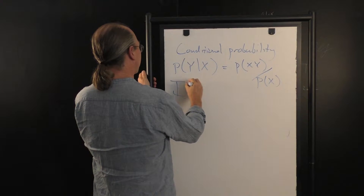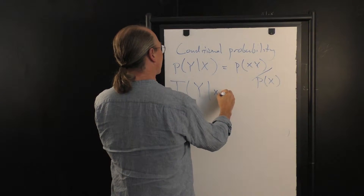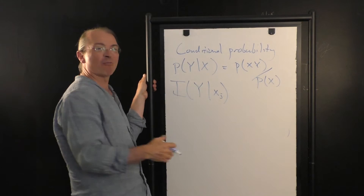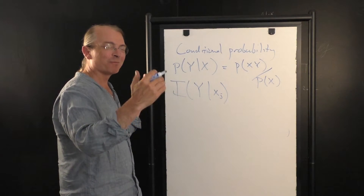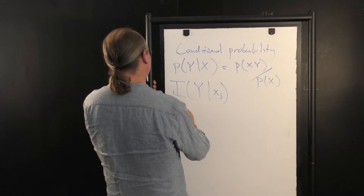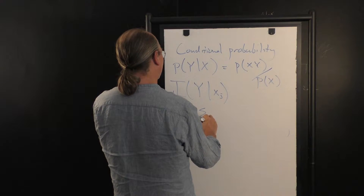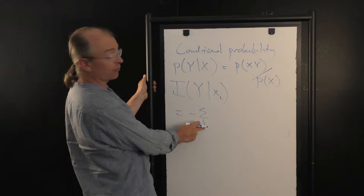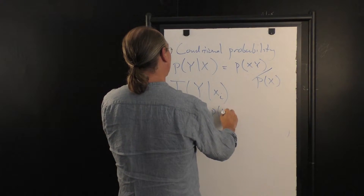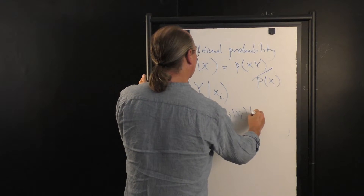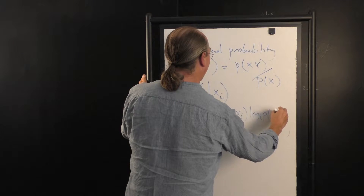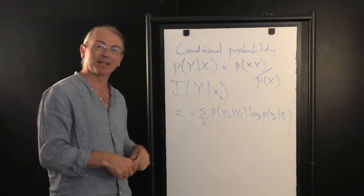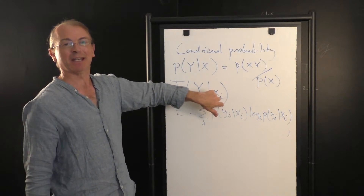We can also define a conditional information — the information in Y given that we know the value of X is X_i. Remember, X_i added this extra index: X is about sunniness, j=0 means not sunny, j=1 means sunny. Using our ordinary formula for information, we sum over the possible values j of Y: negative P(Y_j | X_i) log base 2 of P(Y_j | X_i). This is the amount of information contained in variable Y — whether it's raining or not — given that I know it happens to be sunny.